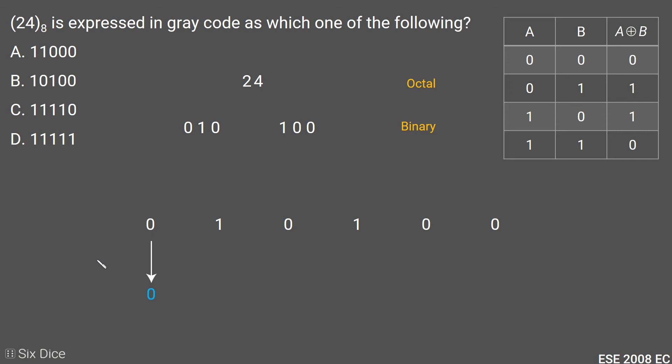First, we will copy the MSB the same as our binary for gray code. Then we will perform XOR of the first and second digit, which is 0 and 1, which produces 1 in the gray code.